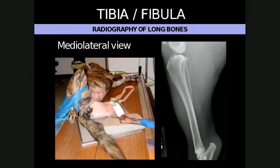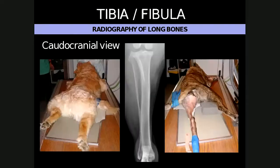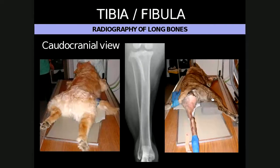For the tibia and fibula, the approach is very similar to the femur. The affected limb is placed on the cassette, the unaffected limb is adducted and pulled away, and a thin foam pad can be placed underneath the hock to get the tibia and fibula more parallel with the cassette. Include the joints proximal and distal to the long bone. For the craniocaudal view, the patient is in sternal recumbency with the affected limb extended cranially and rotated slightly to center the patella. A cranial-caudal view is more difficult as it requires the patient in a sitting position, which may need hand-holding.